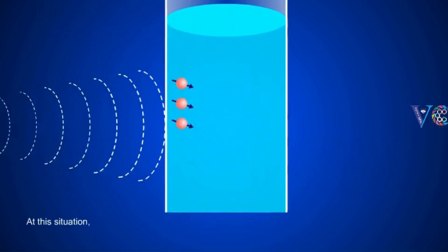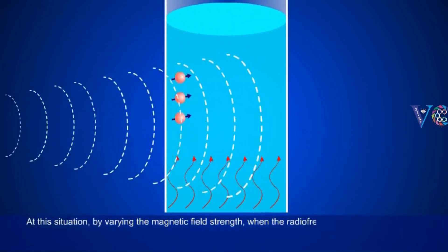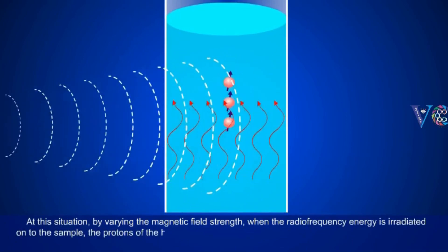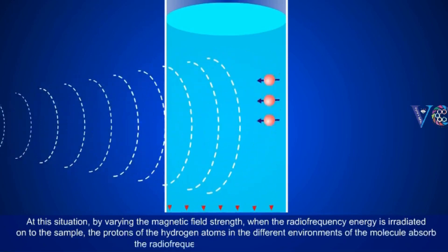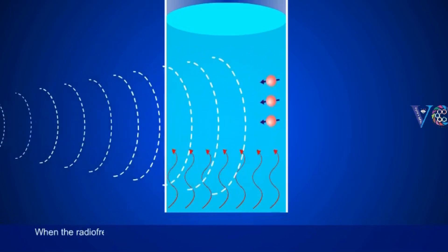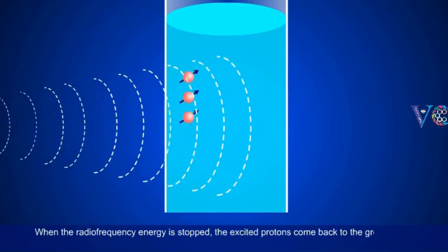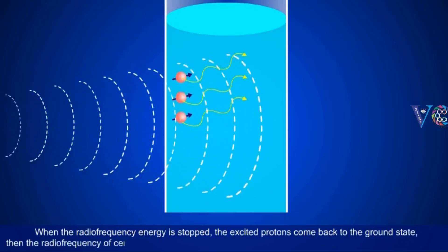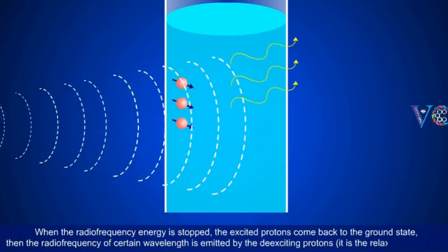By varying the magnetic field strength, when the radio frequency energy is irradiated onto the sample, the protons of the hydrogen atoms in different environments of the molecule absorb the radio frequency and go to the excited state. When the radio frequency energy is stopped, the excited protons come back to the ground state, and radio frequency of a certain wavelength is emitted by the de-exciting protons. This is the relaxation process.